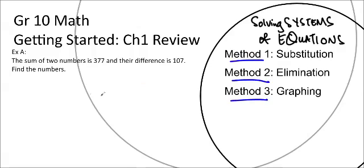We're going to talk about substitution first and solve this word problem together. The sum of two numbers is 377 and their difference is 107. Find the numbers. If you find this a little too easy, pause the video and solve it using substitution, elimination, and graphing, then come back and check your work.